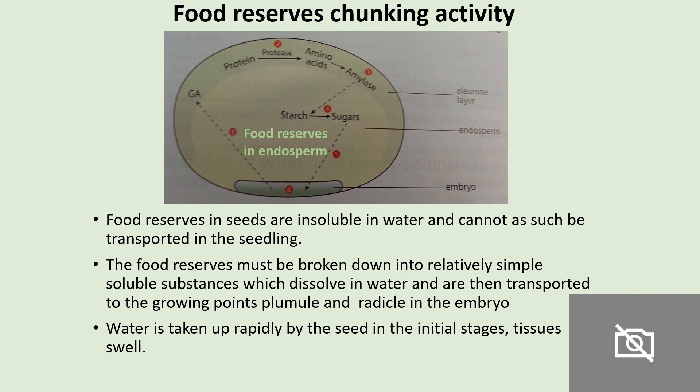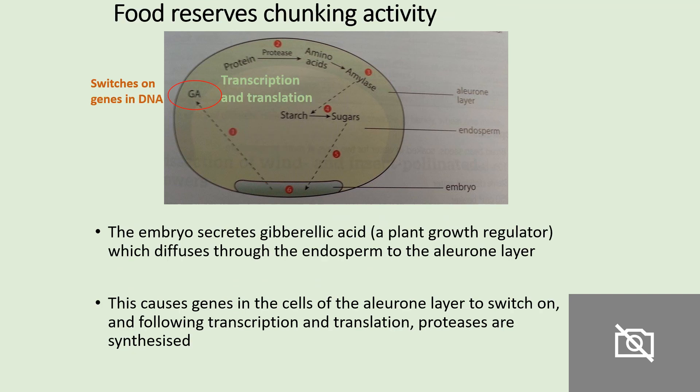Food reserves in seeds are insoluble in water and cannot be used or transported to the growing seedling. Therefore they must be broken down into smaller, simple, soluble units like glucose. Water is initially taken up rapidly by the seed. The embryo then secretes gibberellic acid, a plant growth regulator, which diffuses through the endosperm to the aleurone layer.